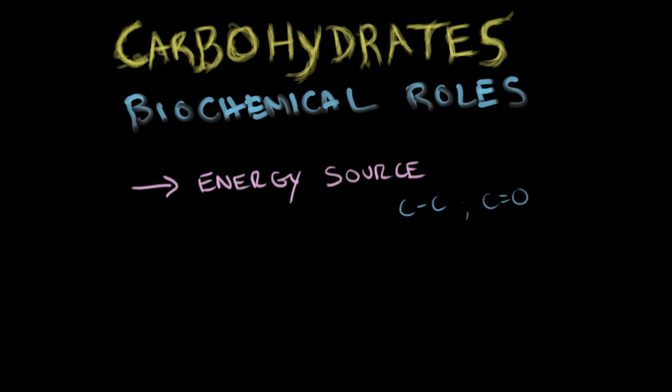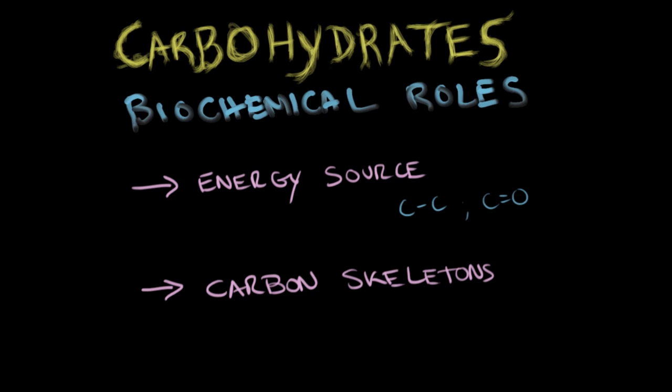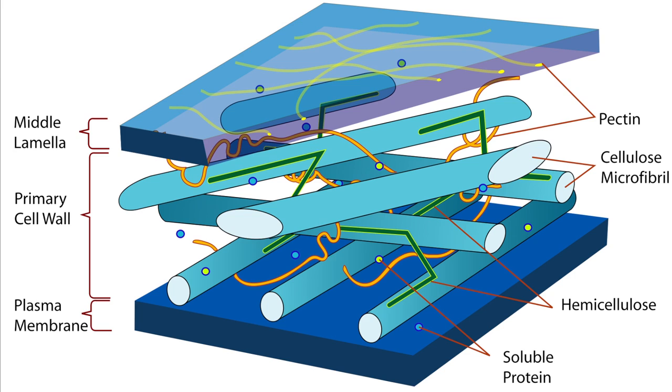The second biochemical role that carbohydrates perform is that they're great carbon skeletons. This means these molecules are able to build or form structures that are very important for life. One example of this are cell walls — cell walls that you see in certain organisms such as plants and bacteria.